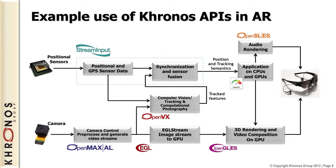So we have the camera with OpenMAT, the sensors coming in with Stream Input, OpenVX for doing the vision tracking, OpenGL ES for the 3D rendering, and OpenSL as the audio API. And increasingly, OpenCL on mobile is just happening right now. I think it's going to be a really interesting development over the next year or two.